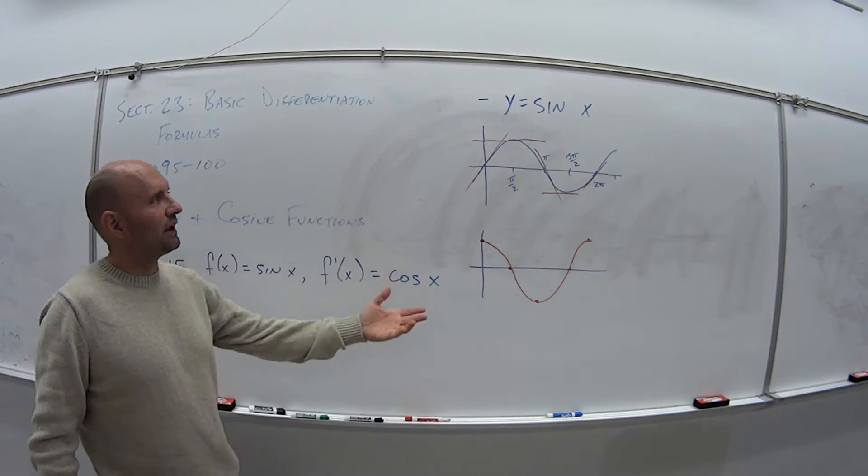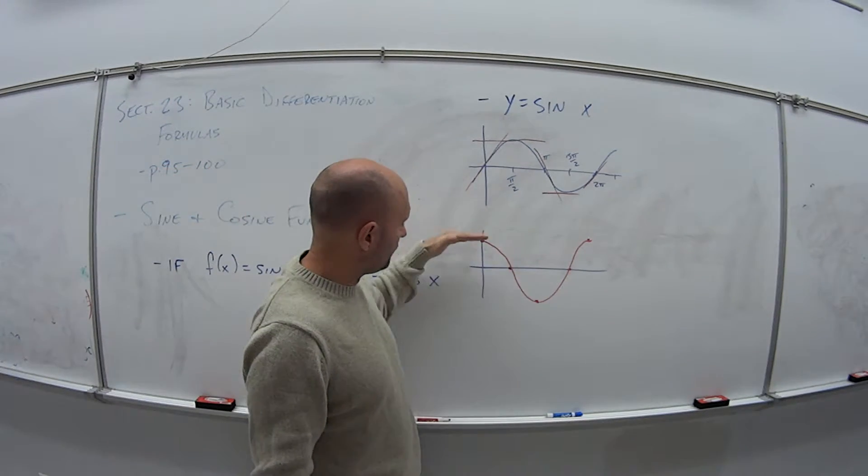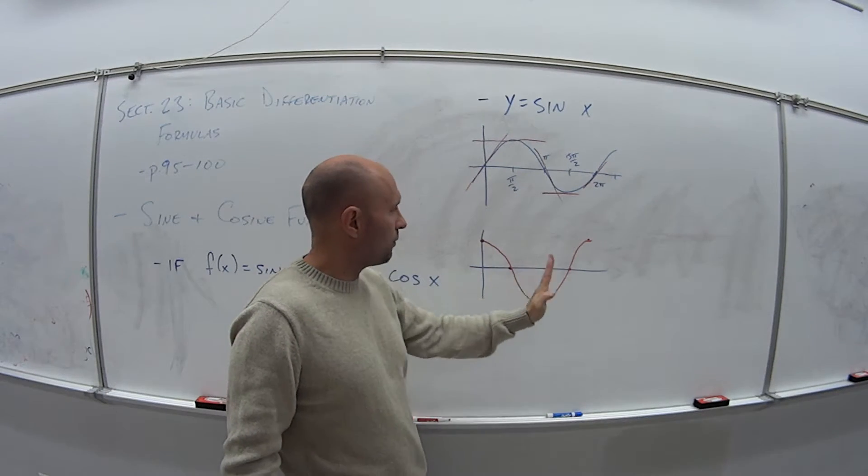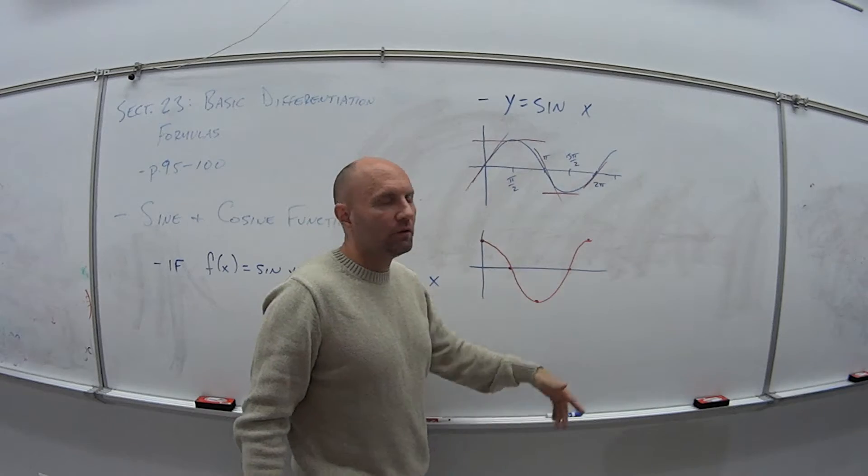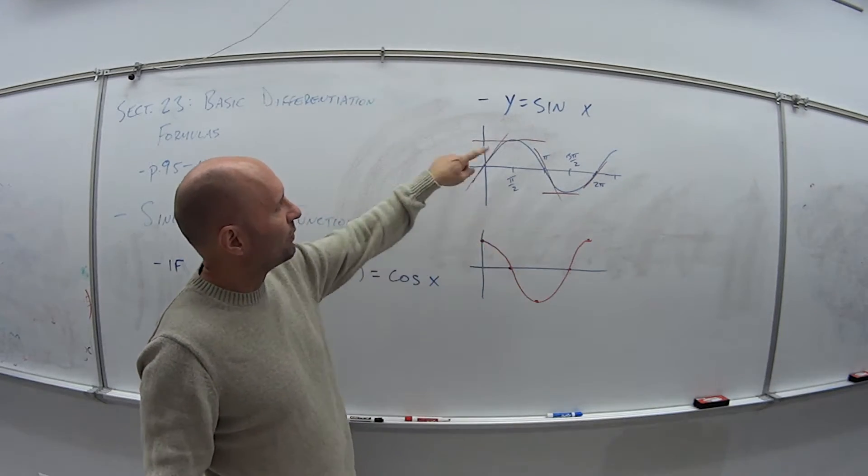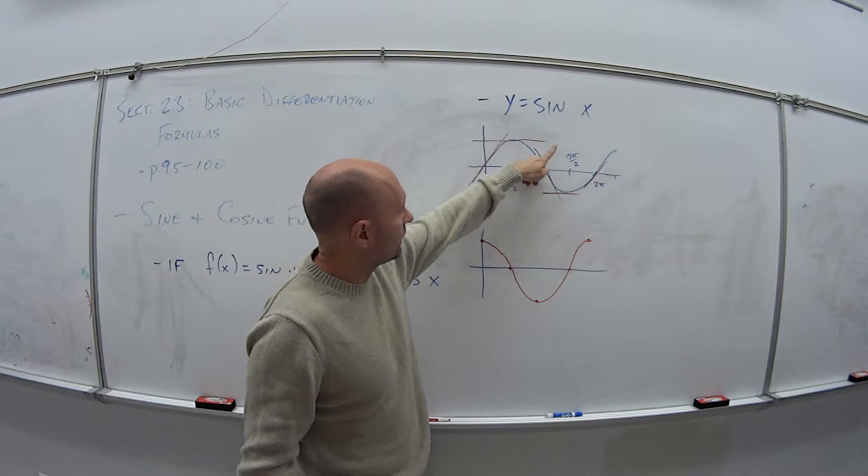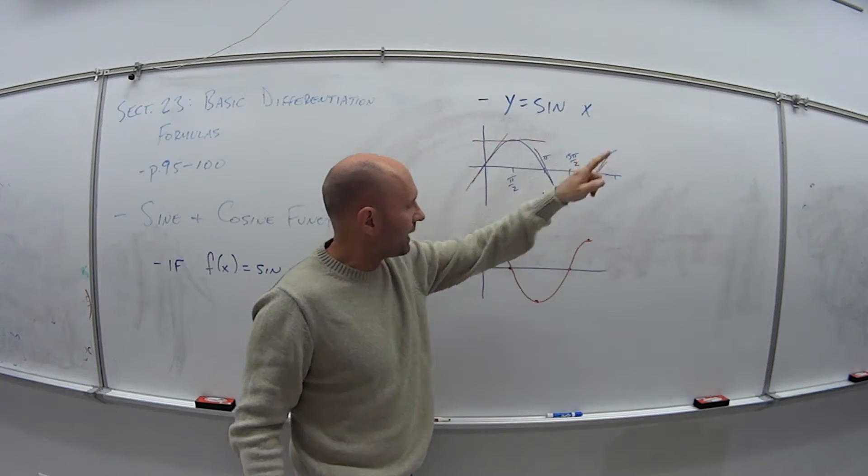And we could do the same thing for the cosine curve. If we plot our points here, what do we have? Zero, negative 1, zero, positive 1, zero, the whole way. And if you plot them, what you're going to get is a sine curve, but it's upside down. We're going to come down and then go back up and come down and go back up.